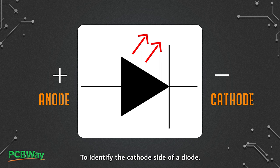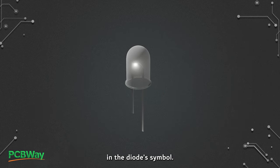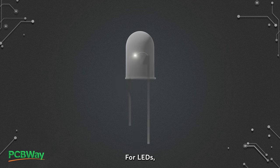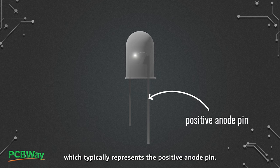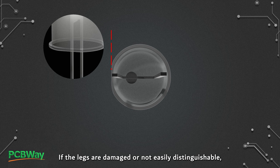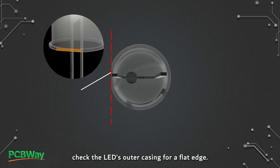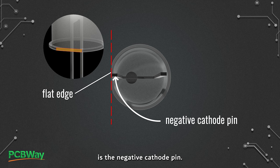LEDs employ this same symbol but enhance it with two small arrows to signify their light-emitting capabilities. To identify the cathode side of an LED, look for the longer leg, which typically represents the positive anode pin. If the legs are damaged or not easily distinguishable, check the LED's outer casing for a flat edge — the pin closest to this flat edge is the negative cathode pin.